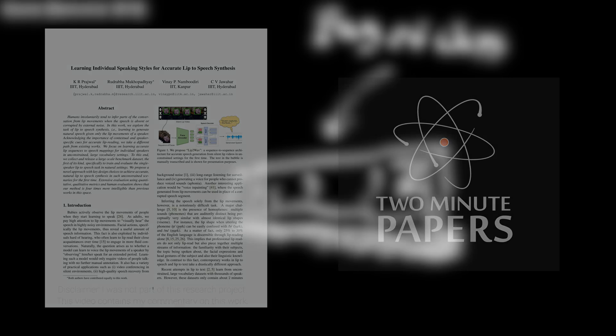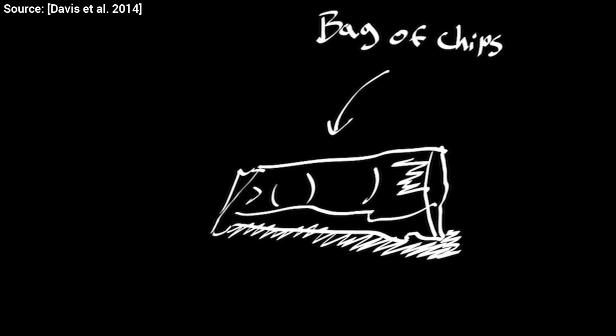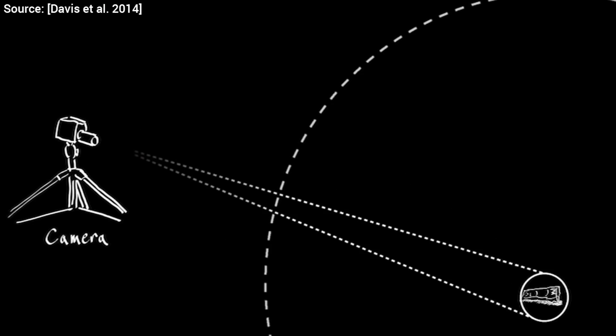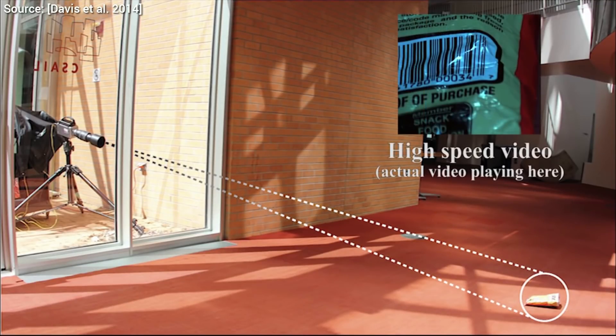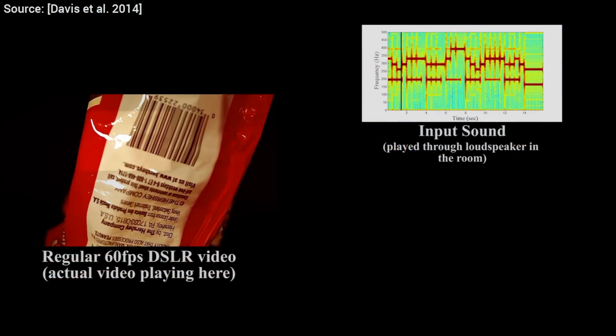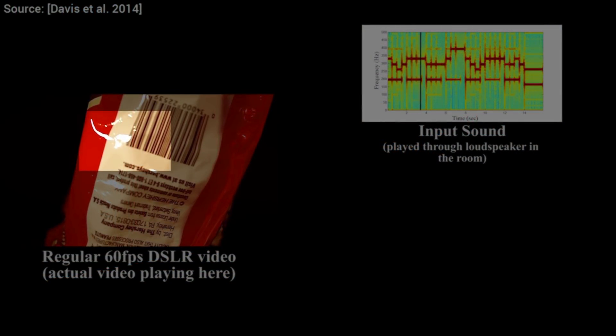When watching science fiction movies, we often encounter crazy devices and technologies that don't really exist or sometimes ones that are not even possible to make. For instance, reconstructing sound from vibrations would be an excellent example of that and could make a great novel with the Secret Service trying to catch dangerous criminals. Except that it has already been done in real life research.